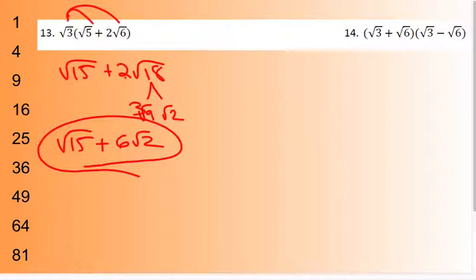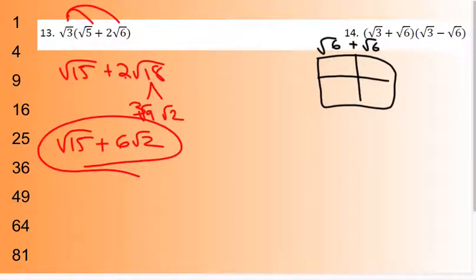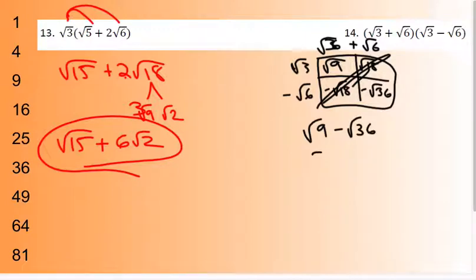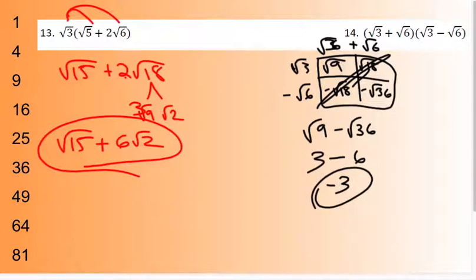Number 14 is FOIL. Make your table: (√3 + √6)(√3 − √6). You get √9, √18, minus √18, minus √36. The square root of 18 minus square root of 18 cancels out. So I'm left with √9 minus √36. Square root of 9 is 3, square root of 36 is 6. So after all that, I end up with negative 3.